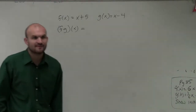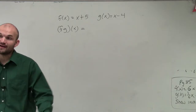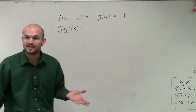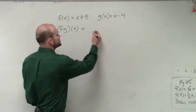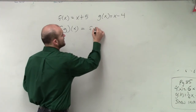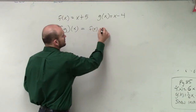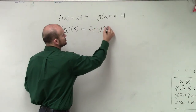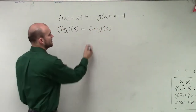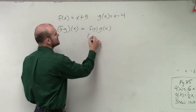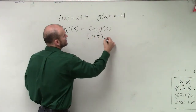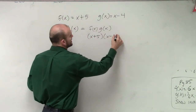For the next one, I have f times g of x. In doing f times g of x, what we're simply going to do is f of x times g of x. Therefore, by plugging in and using parentheses, we have x plus 5 times x minus 4.